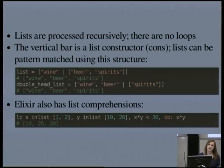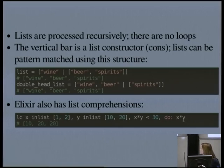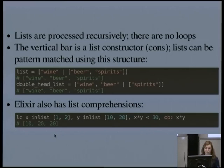Elixir also has list comprehensions — more syntactic sugar if you want to iterate over lists or multiple lists and get cross products, you can do that in Elixir too, and also filter. Here, we're getting the cross product of these two lists and the multiplication of each of the two elements, but we're limiting it to those results that are less than 30, so we only get three results rather than four.